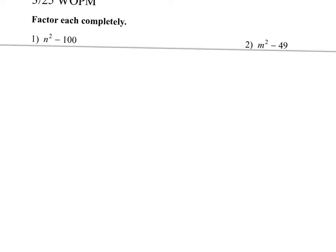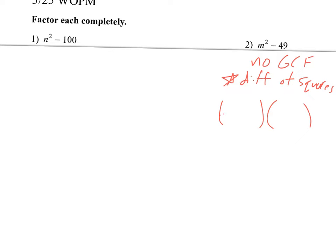Let's start on number two. We first check GCF, but there's no GCF here — there's no number we can divide both terms by. So this one is actually a special pattern: the difference of perfect squares. I know that because 49 is a perfect square, as is m squared. With these, we always take the square root of each. So it'll be m and 7, and then one parenthesis is a plus and one is a minus.